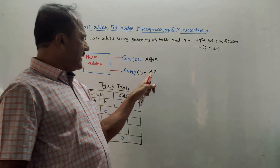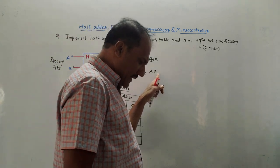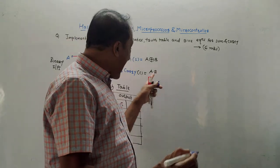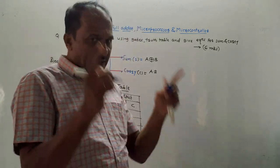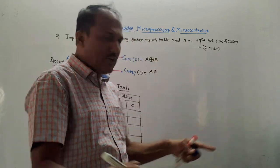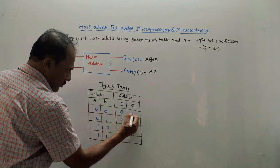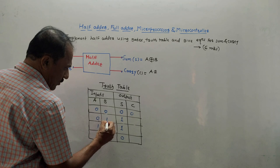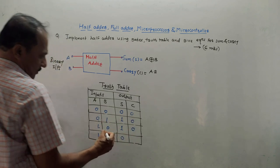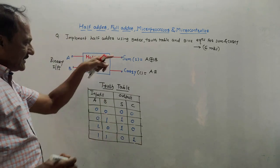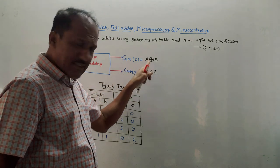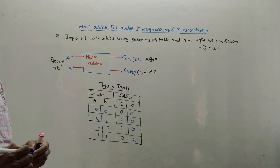Now for carry, the equation is A dot B — the AND operation. In logical AND, output is 1 only when both inputs are 1. So: 0-0 gives carry 0; 0-1 gives 0; 1-0 gives 0; and 1-1 gives carry 1. This is the truth table for the half adder. Just by remembering these two logical expressions, you can generate the truth table.